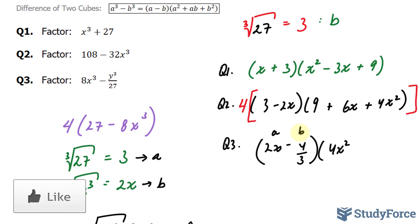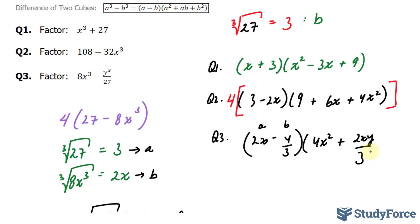Remember, this is your a, and this is your b. a times b, the answer to that is plus 2xy over 3, and lastly, b to the power of 2 is y squared over 9. This expression is the factored version of the difference of these two cubes. And there you have it,